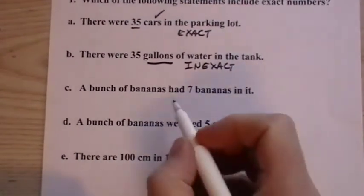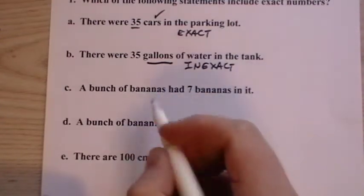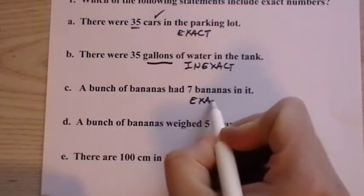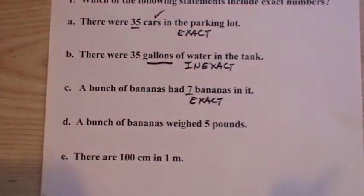A bunch of bananas had seven bananas in it. So you had to count them out. One, two, three, four, five, six, seven. That's counting. That's exact. So seven is an exact number.